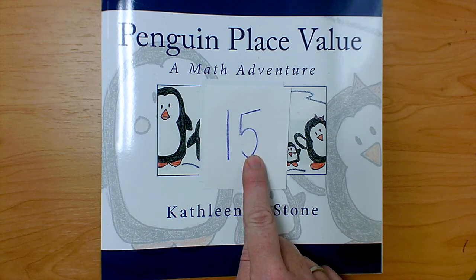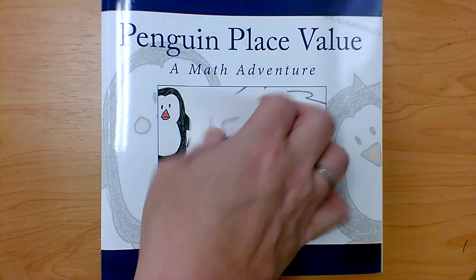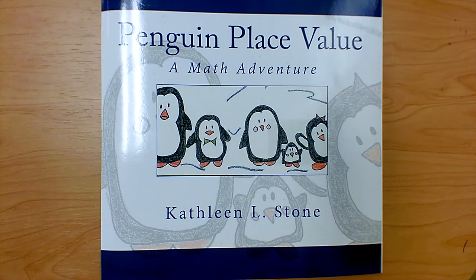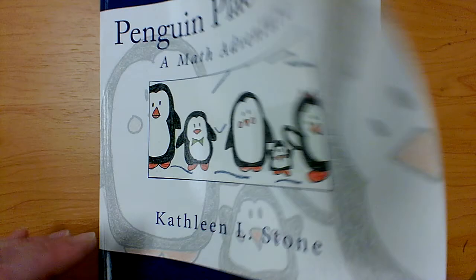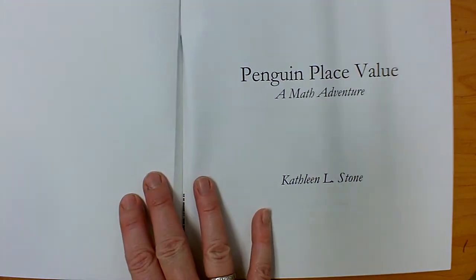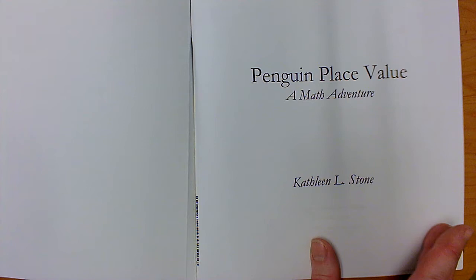One, two, three, four, five, six, seven, eight, or nine. So this book is about place value, but it's also about penguins. This is a great story. I hope you enjoy it. Penguin Place Value, a math adventure by Kathleen L. Stone.